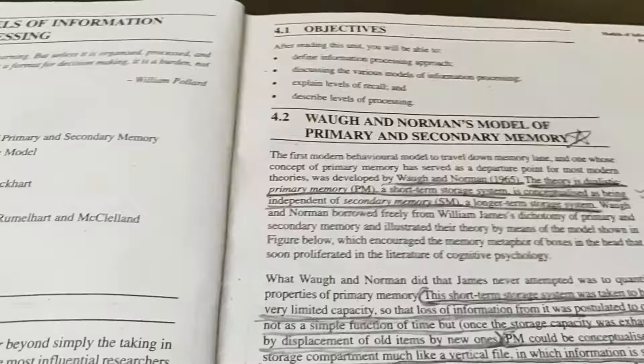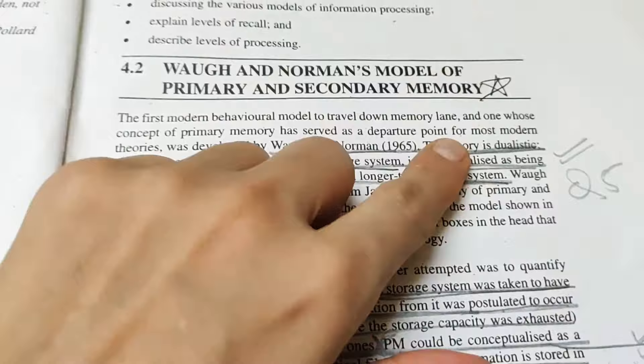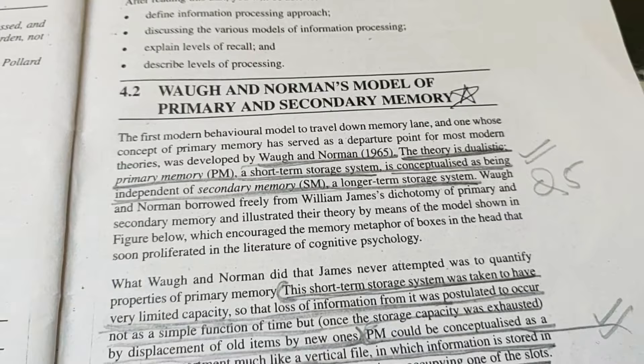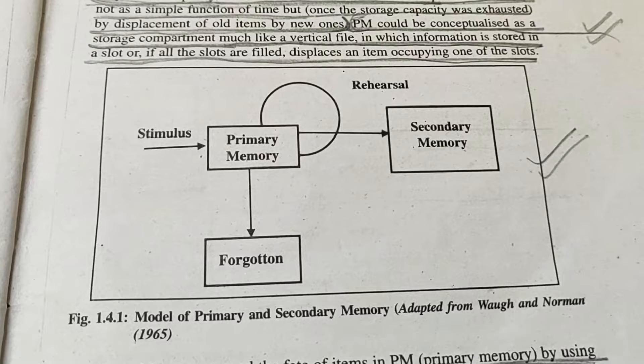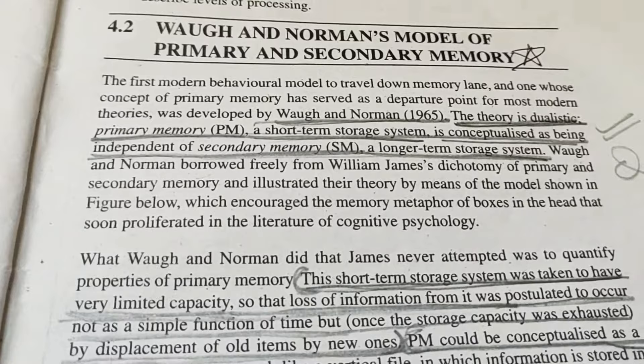The first model we are going to study is Waugh and Norman's Model of Primary and Secondary Memory. It has got a star, which means it has come in previous exams and there are chances it will come again. From the point of view of the exam, you have to draw this diagram. When you make this diagram, you will automatically remember the whole theory. So, Waugh and Norman told this theory in 1965, and this theory is a dualistic theory.